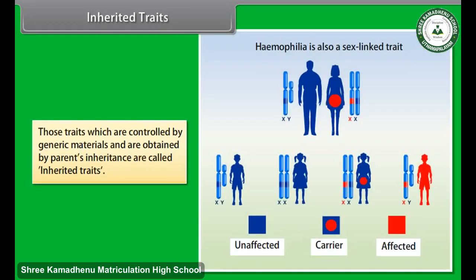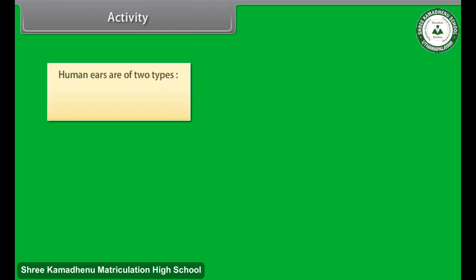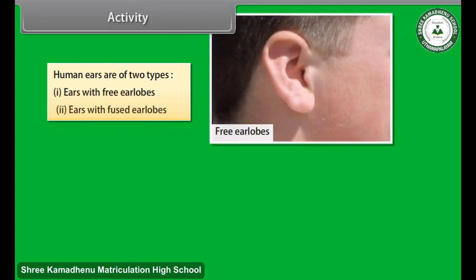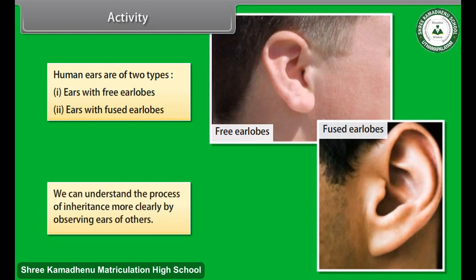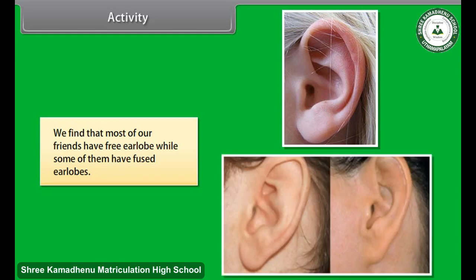Inherited traits are those traits which are controlled by genetic materials and are obtained from parents through inheritance. For example, human ears are of two types: ears with free earlobes and ears with fused earlobes. We can understand the process of inheritance more clearly by observing ears of all the students in the classroom — we find that most of our friends have free earlobes while some have fused earlobes.